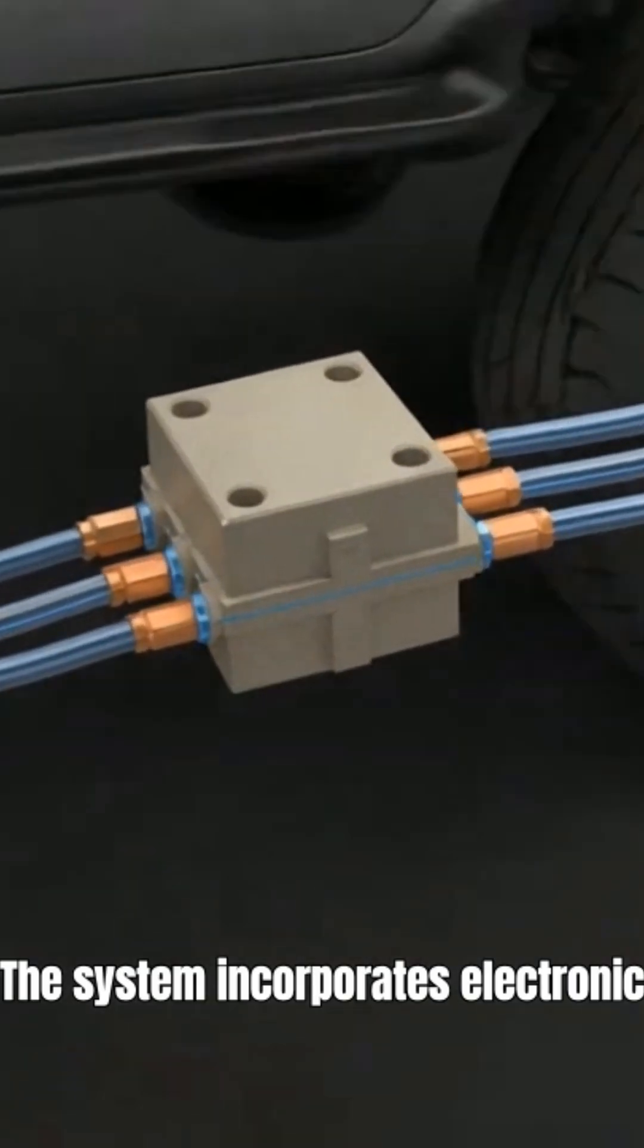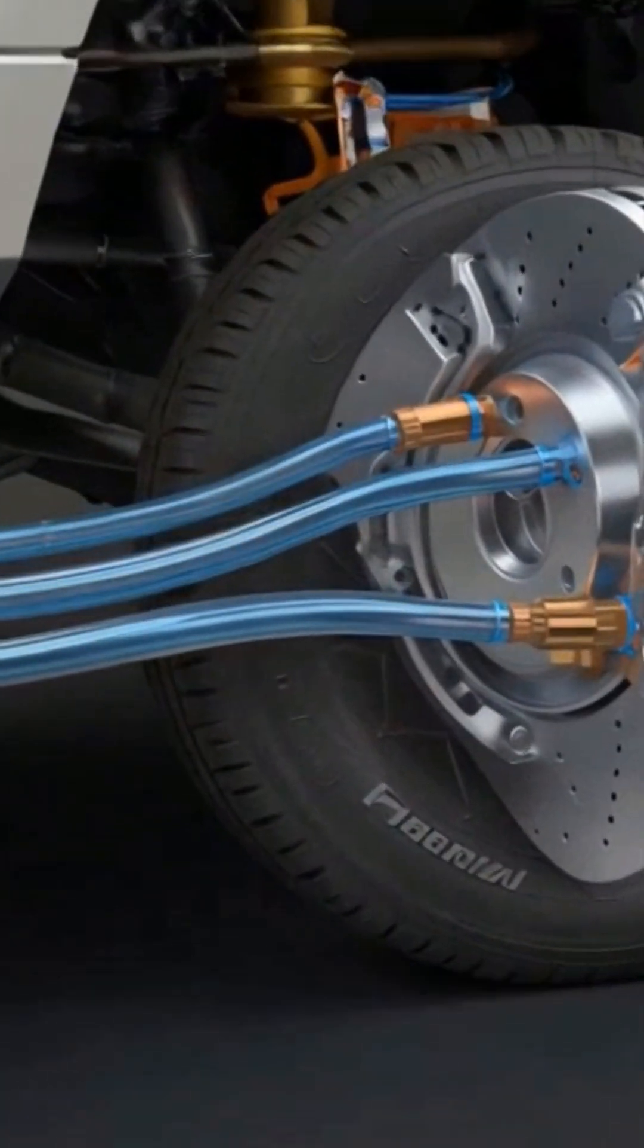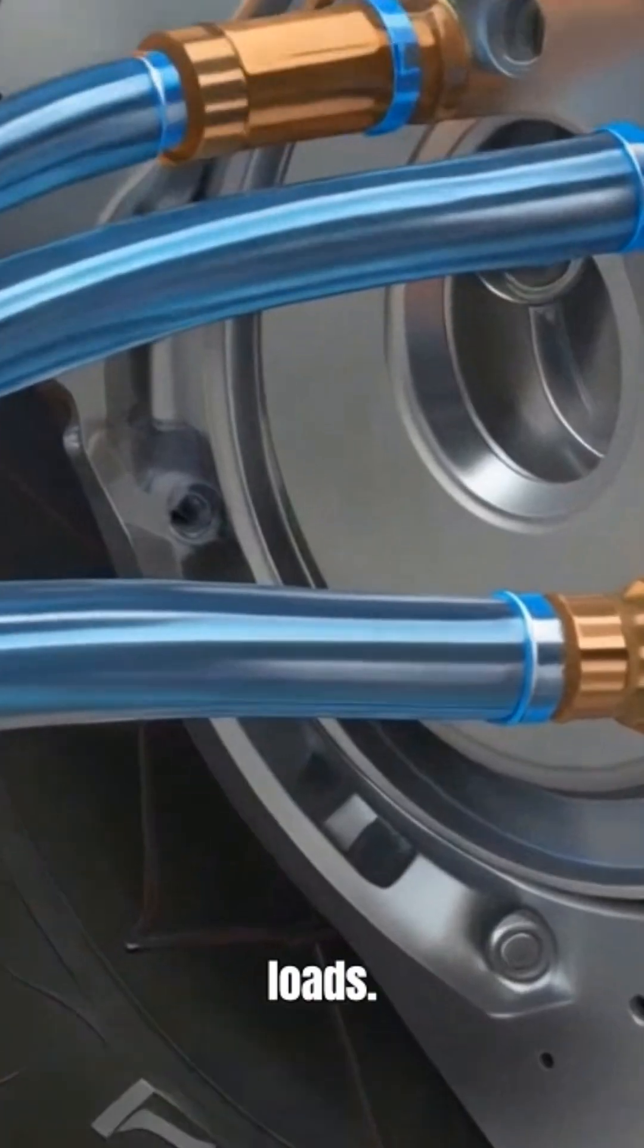The system incorporates electronic proportioning inside the ABS module to balance brake force between front and rear wheels under different loads.